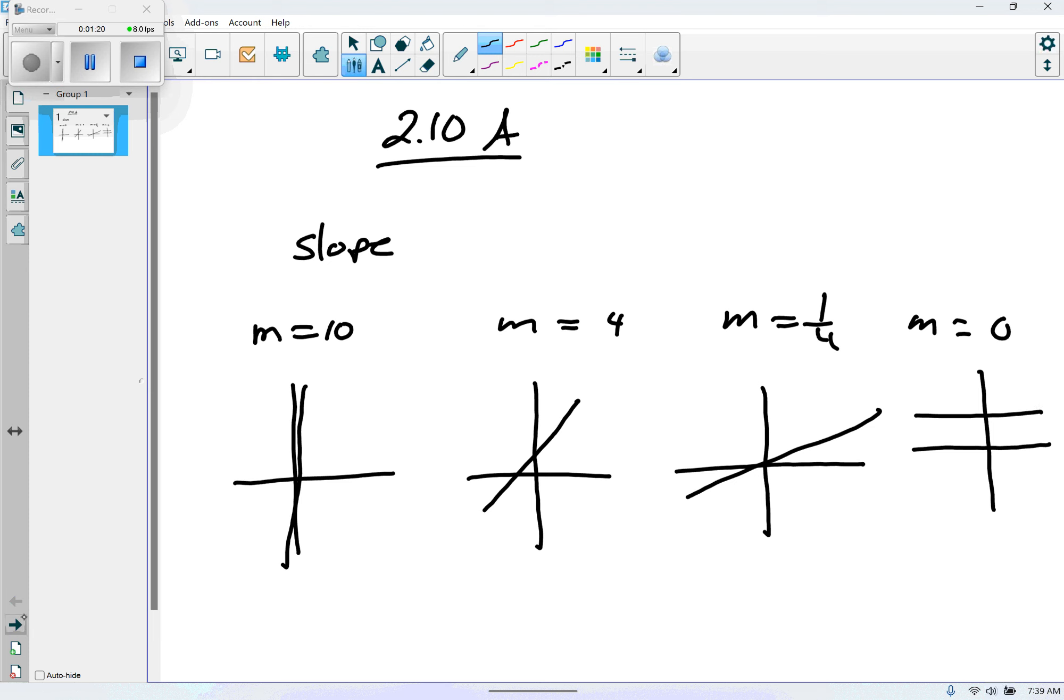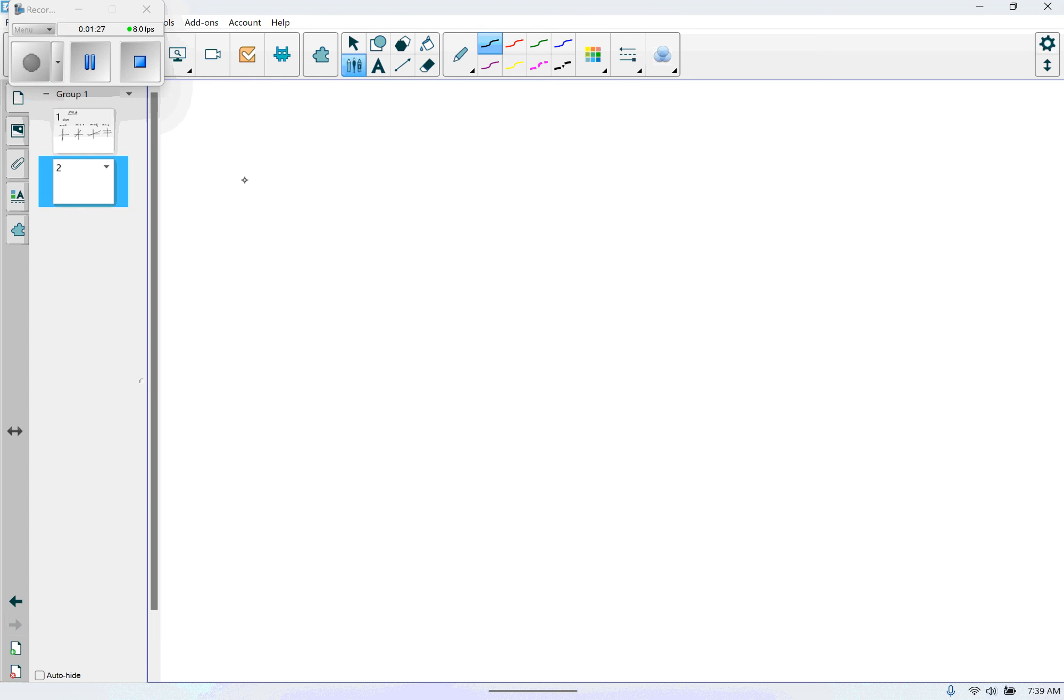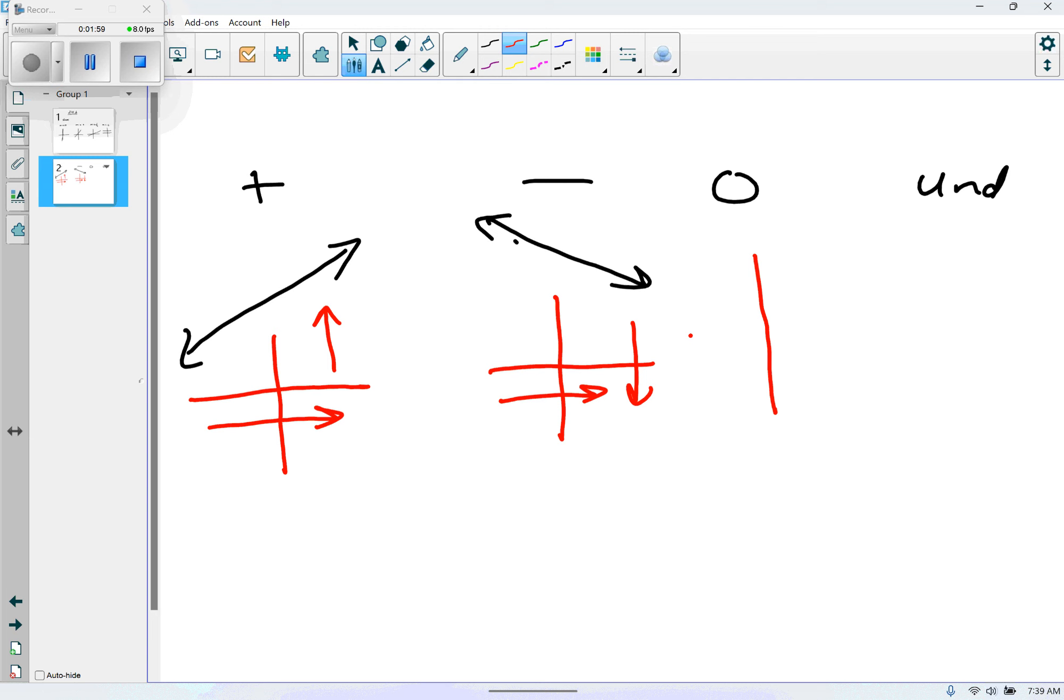Down below it says generally there are four ways that linear equations may appear graphically. You have a positive slope, a negative slope, a 0 slope, and an undefined slope. Positive slope means if I go to the right on my graph, the graph is going up. Negative slope is going down as I go right. Slope of 0 is a horizontal line, and an undefined slope would be a vertical line.